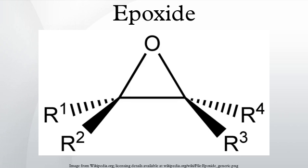Intramolecular SN2 substitution is a variant of the Williamson ether synthesis. In this case, an alkoxide ion displaces a chloride atom within the same molecule. The precursor compounds are called halohydrins; for example, 2-chloropropanol. Approximately half of the world's supply of propylene oxide arises via this route. An intramolecular epoxide formation reaction is one of the key steps in the Darzens reaction. In the Johnson–Corey–Chaykovsky reaction, epoxides are generated from carbonyl groups and sulfonium ylides, where a sulfonium is the leaving group instead of chloride.